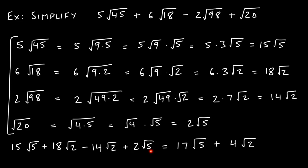Now we combine like terms. We match up the indices and radicands: 15 radical 5 and 2 radical 5 are like terms — 15 plus 2 gives 17 radical 5. Then 18 radical 2 minus 14 radical 2: 18 minus 14 gives 4 radical 2. Both the index and radicand must be identical before combining. The final answer is 17 radical 5 plus 4 radical 2.